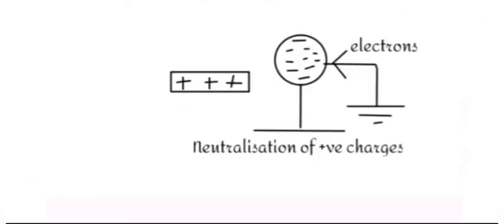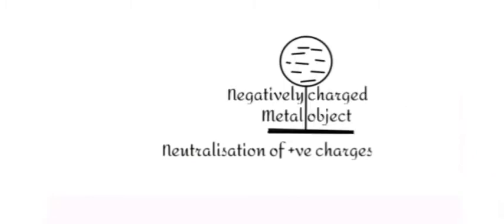Now the metal sphere becomes negatively charged due to neutralization of positive charge. First we remove the grounding or disconnect the wire, then remove the positive charge rod. It means that a positive object causes a negative charge in the induction. That is charging by induction.